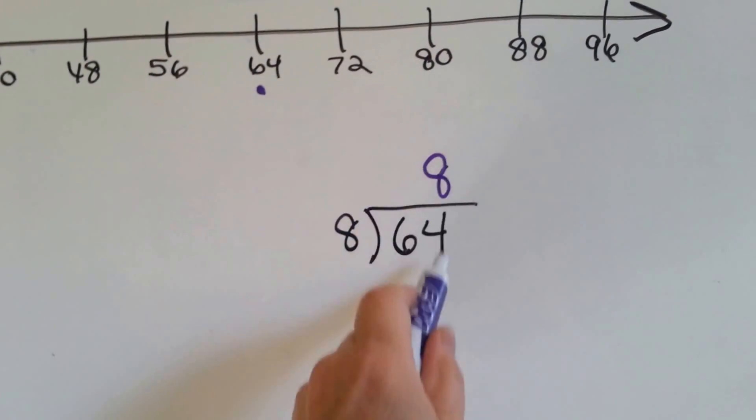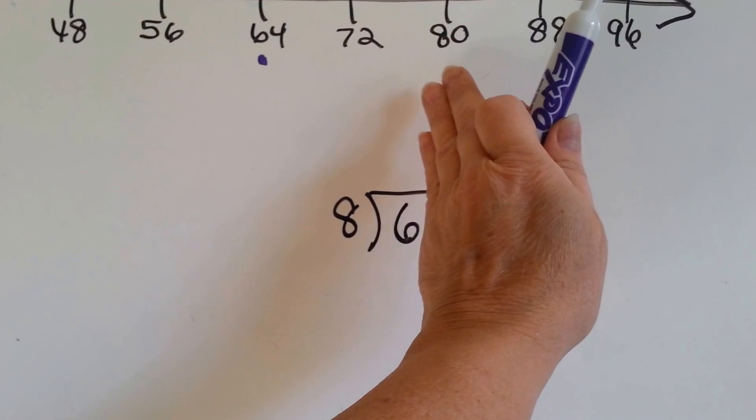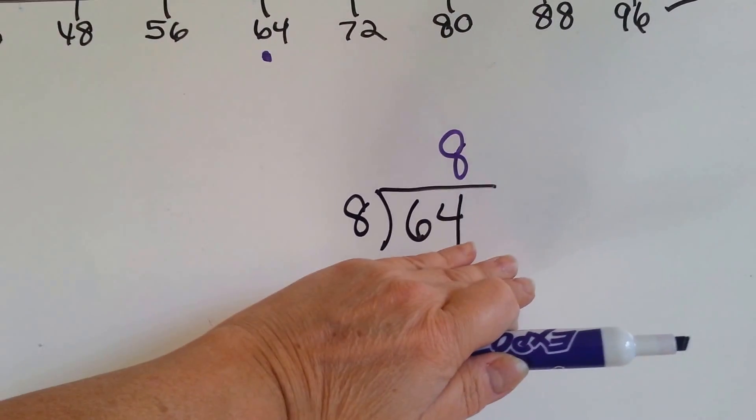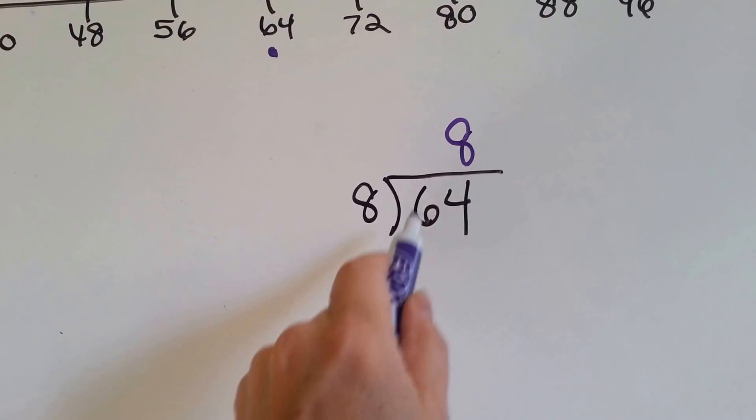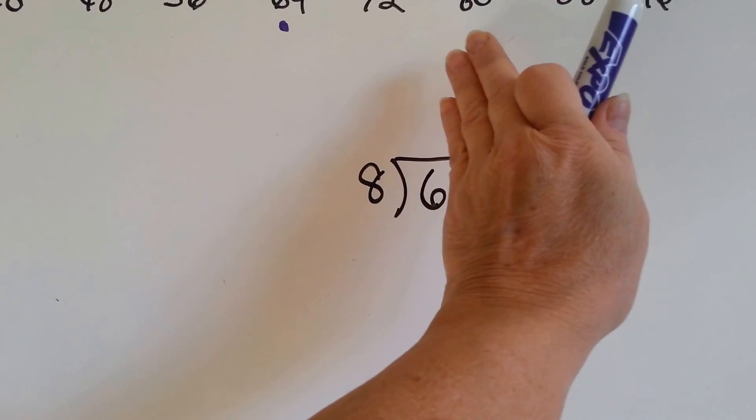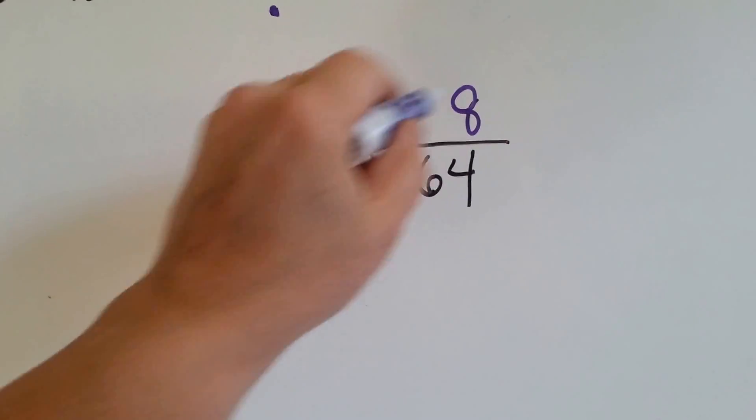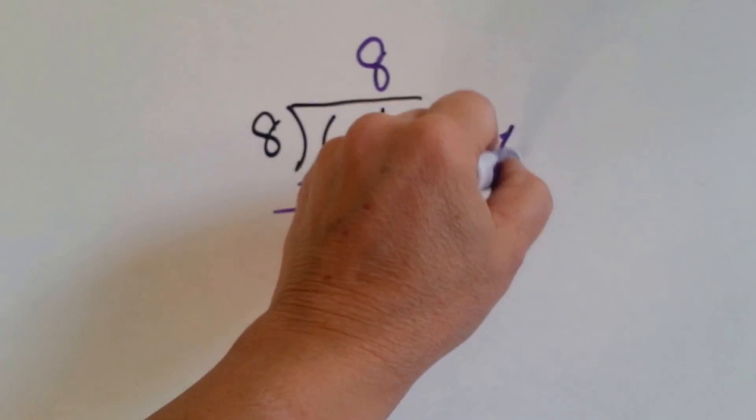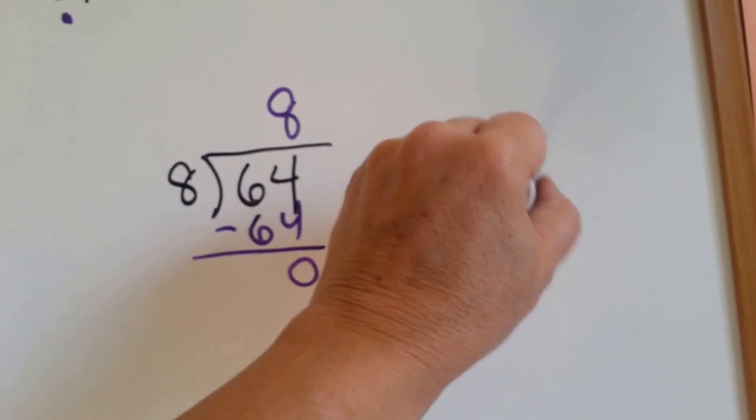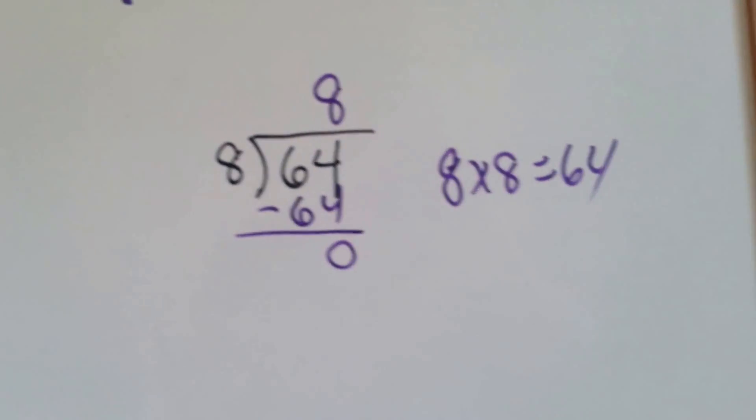We write the 8 above the 4 because we're not saying 8 goes into 6. We're saying 8 goes into 64. And by putting it over the 4, that lets everyone know we use the entire 64 and not just the 6. 8 times 8 is 64. We do our subtraction and get 0. See? 8 times 8 is 64.